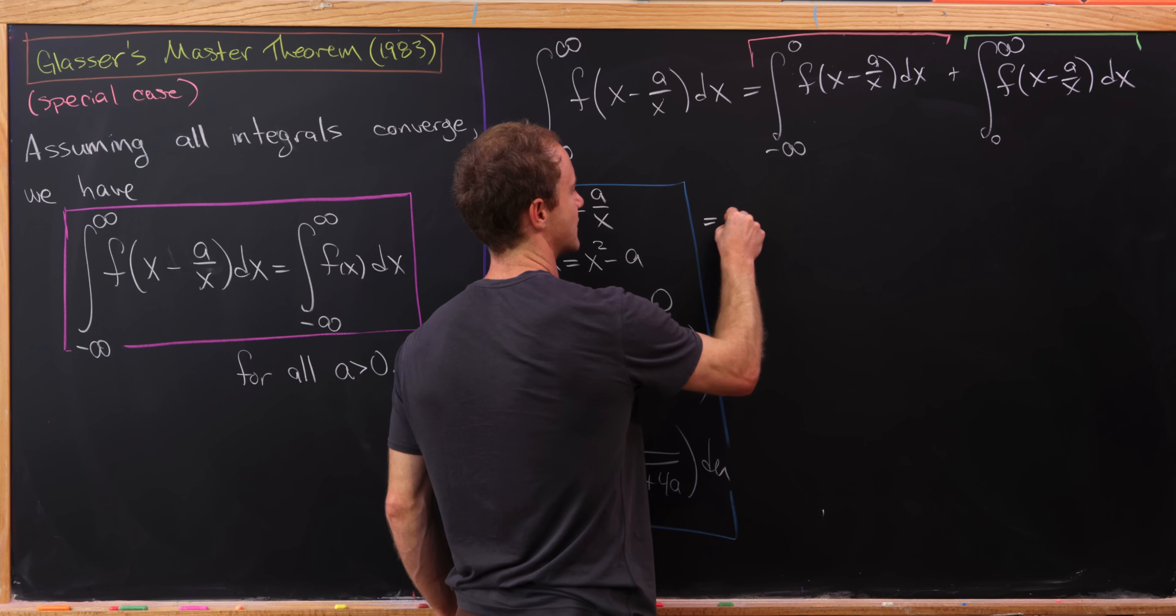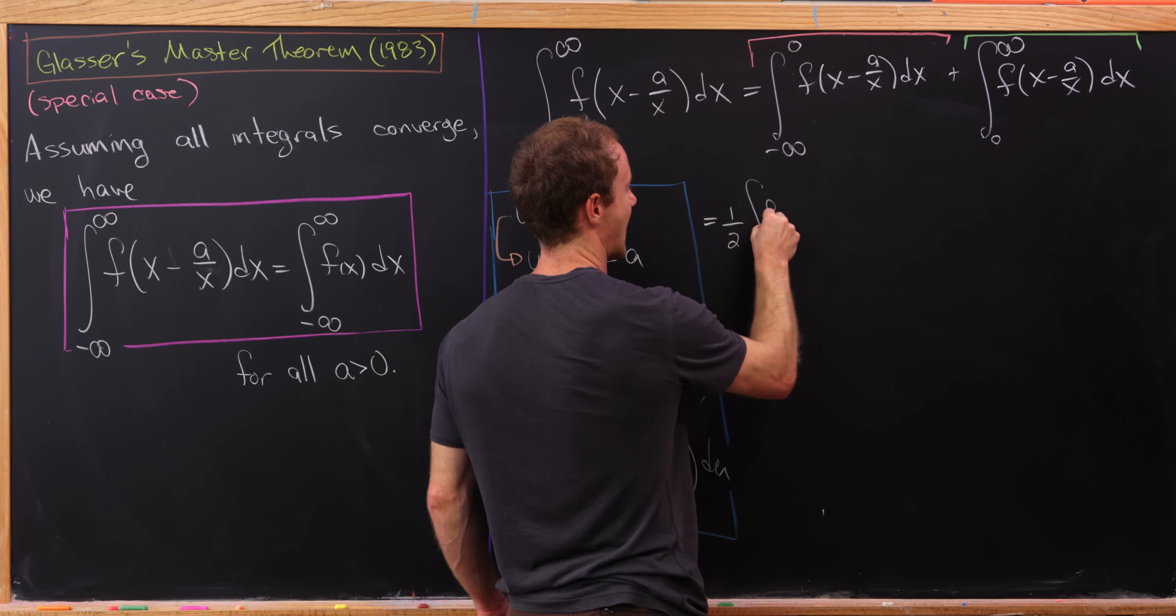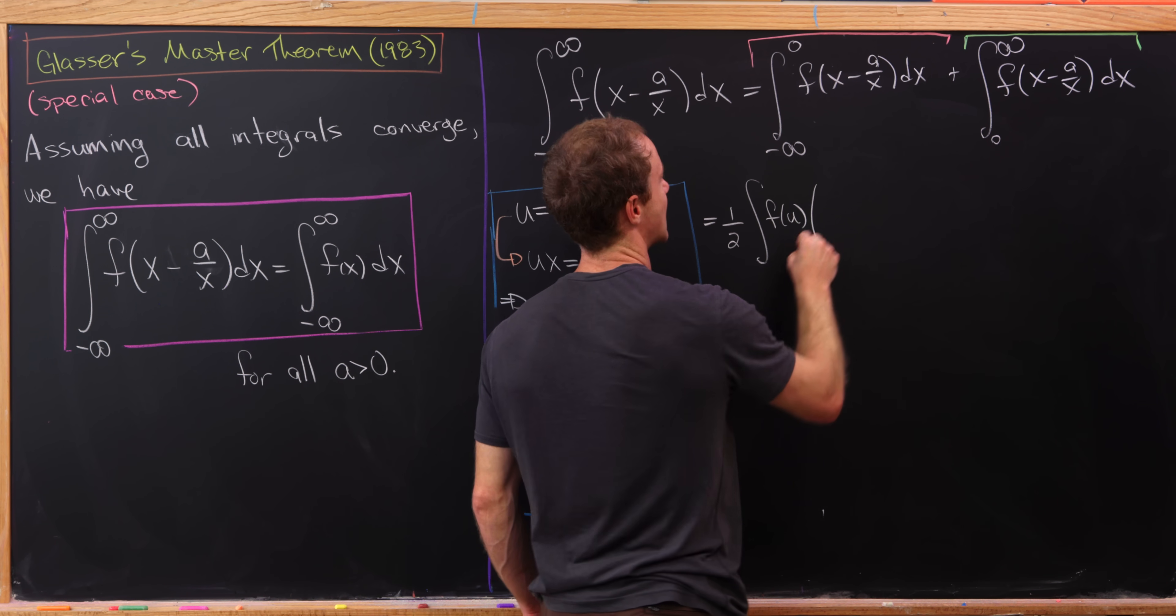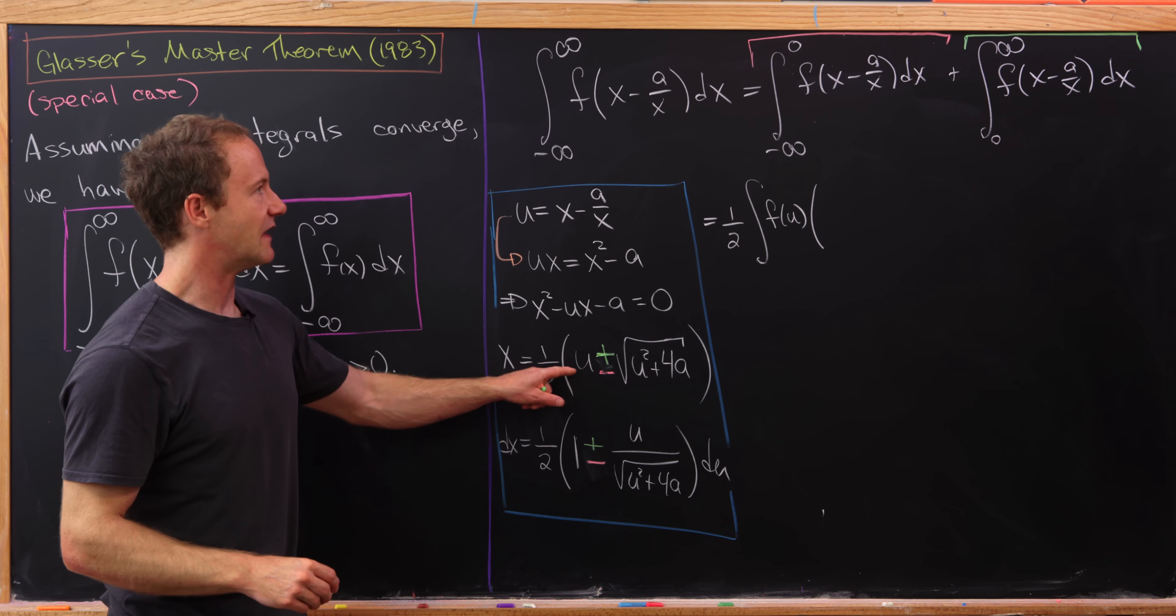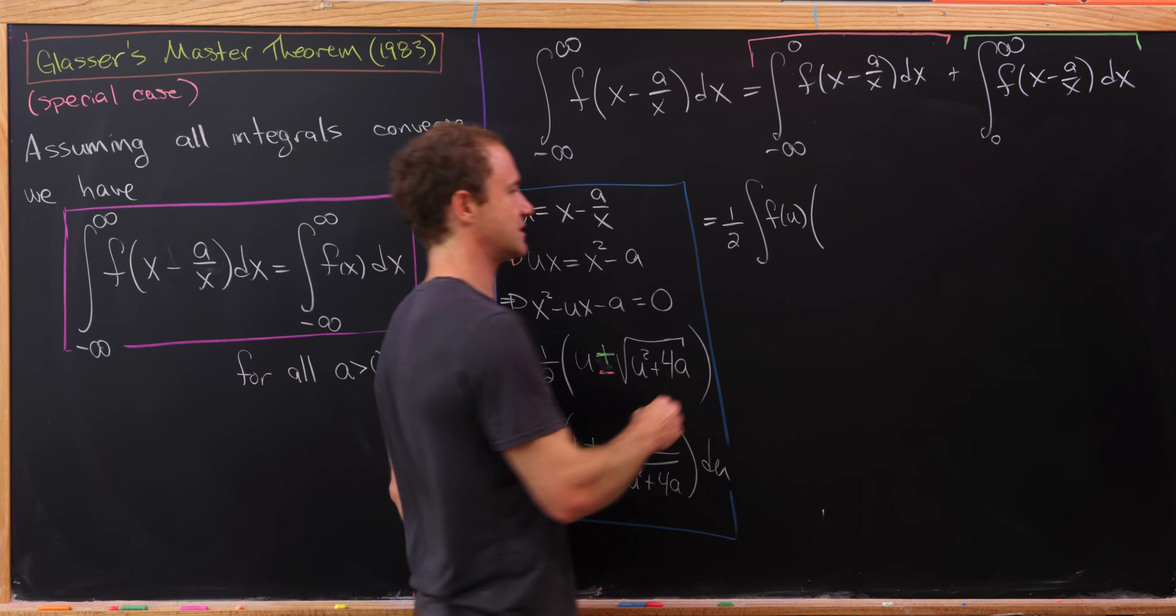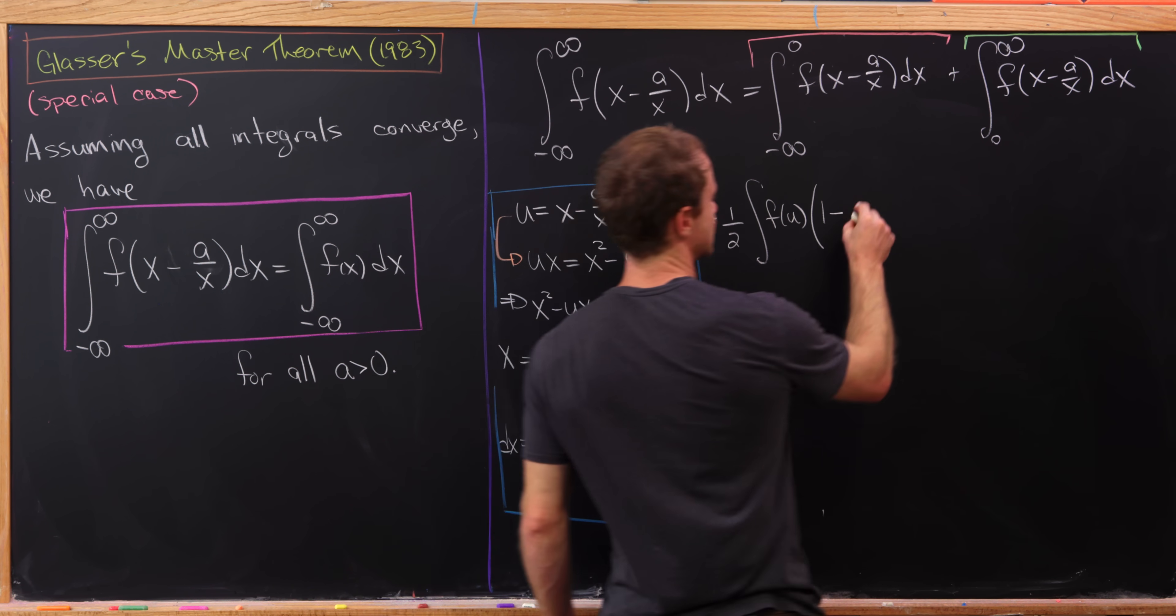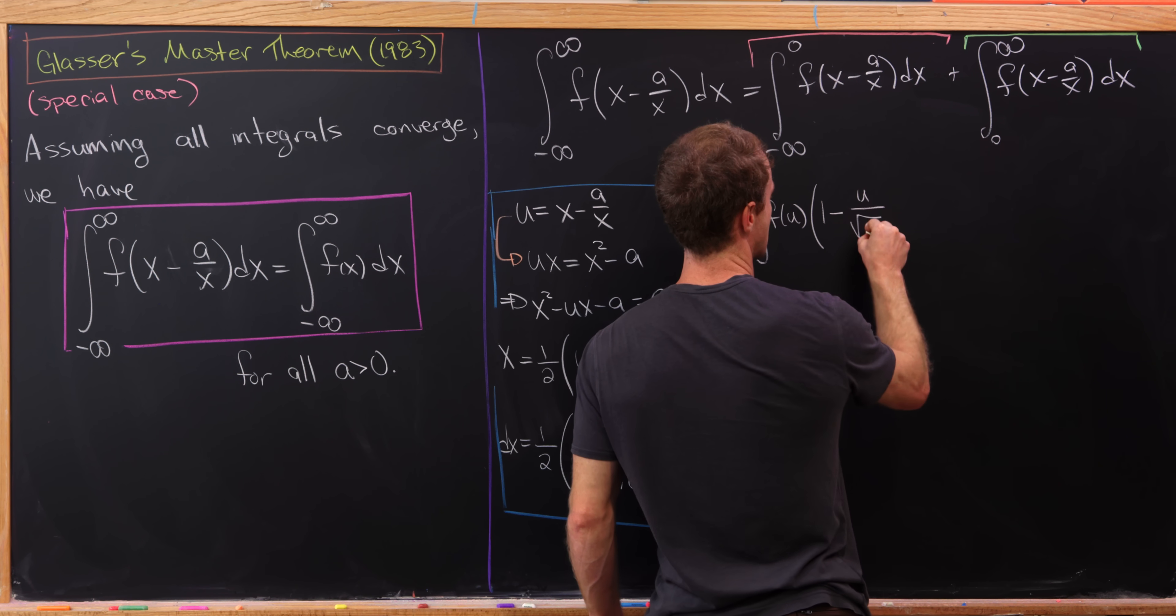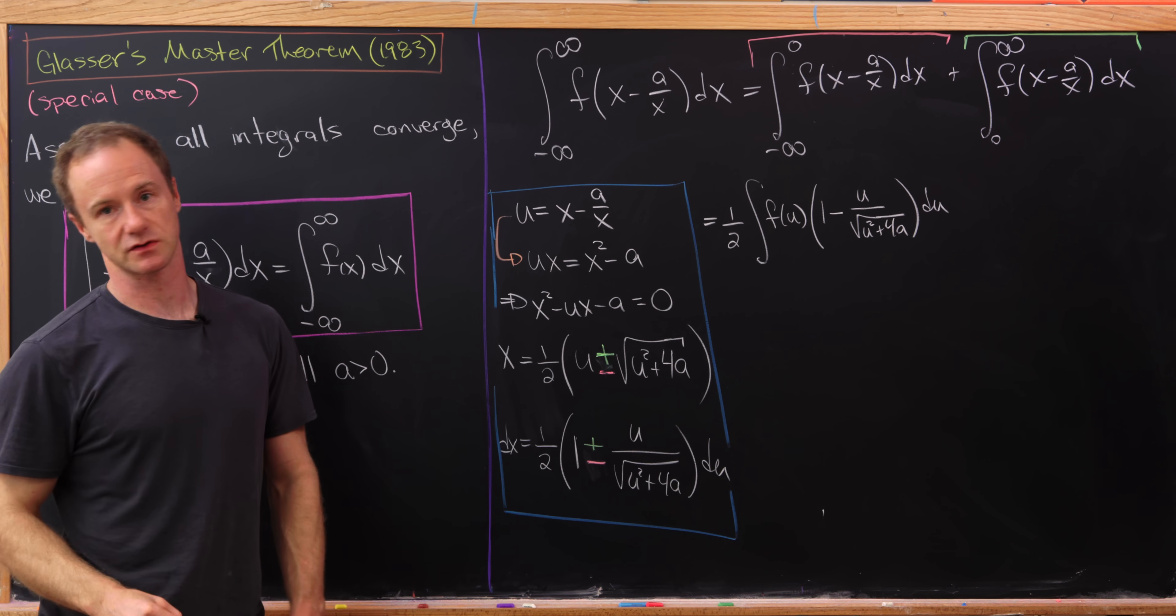So this is going to leave us with one half, and then we'll have the integral of f of u times the dx component. Notice I took the half out, and this one's the one attached to the minus sign. So this will be one minus u over the square root of u squared plus 4a du. So that's what we get for that first integral.